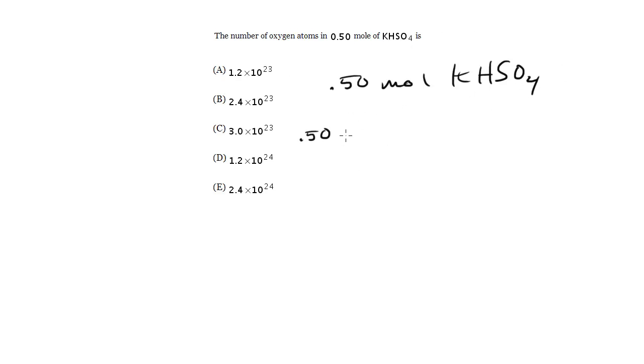So I can go ahead and just write this out with my factor label. So 0.5 mole of KHSO4 times, for every 1 mole of KHSO4, I've got 4 moles of O. So go ahead and multiply that out, I get 2 moles of O.